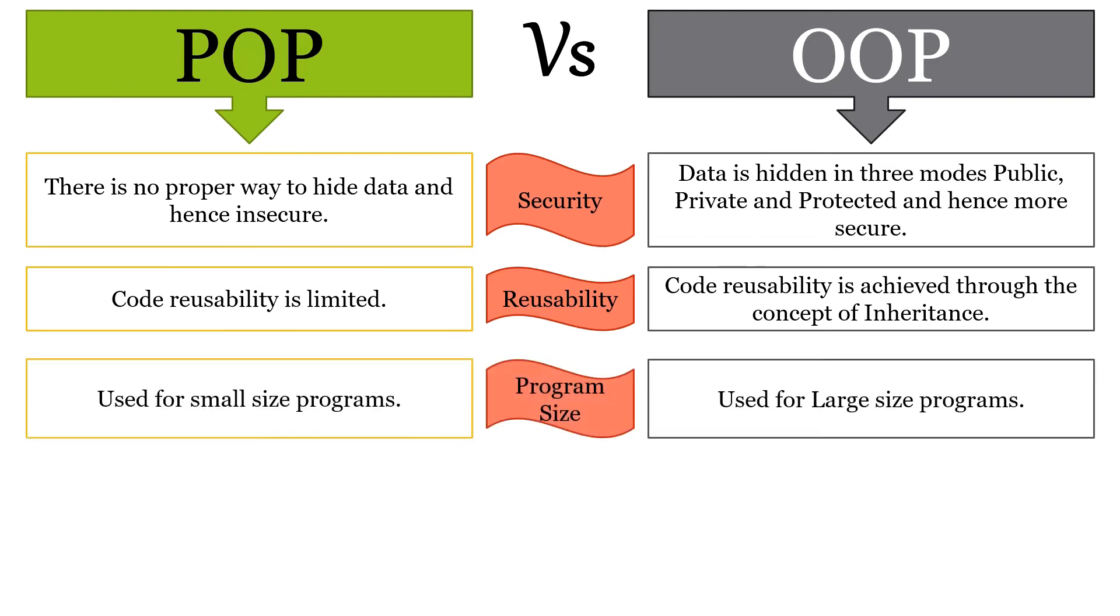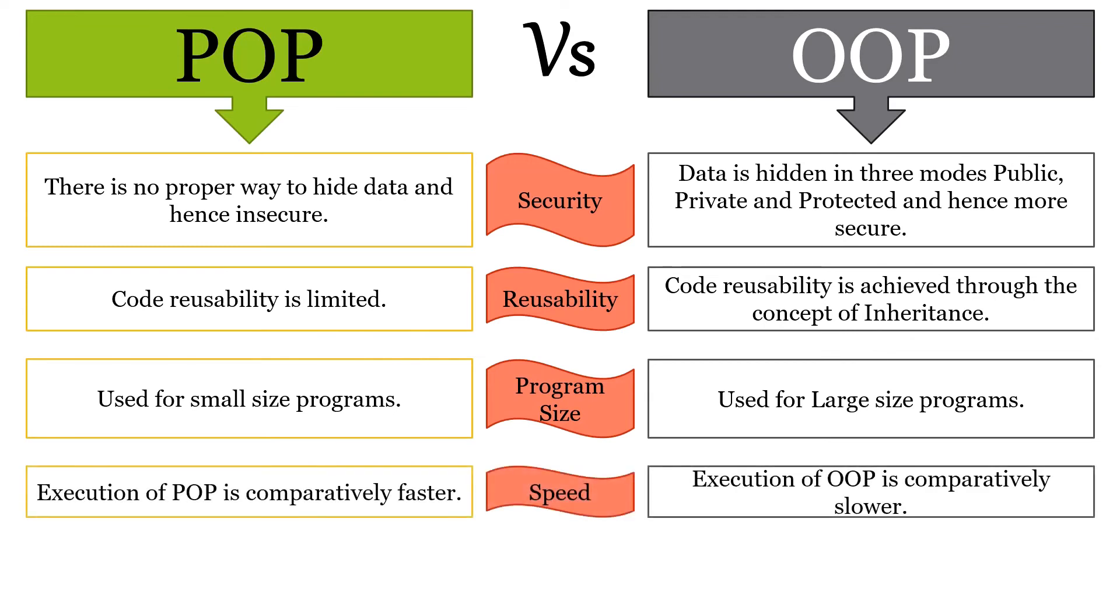POP is used to implement small size programs whereas OOP is used to implement large size programs. Execution of a POP program is comparatively faster whereas execution of an OOP program is comparatively slower.